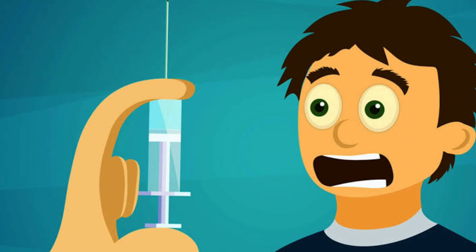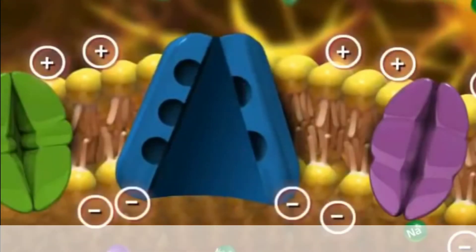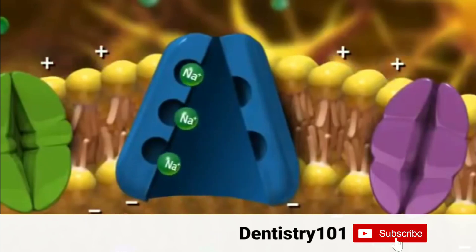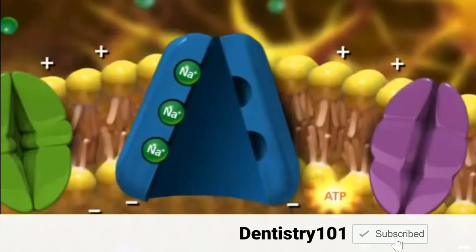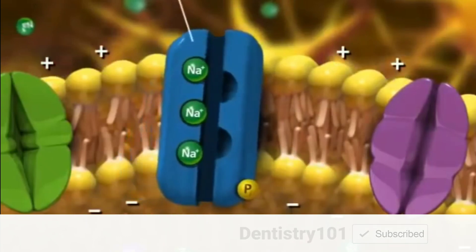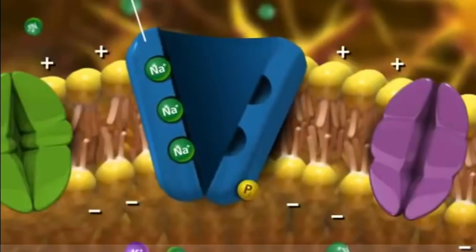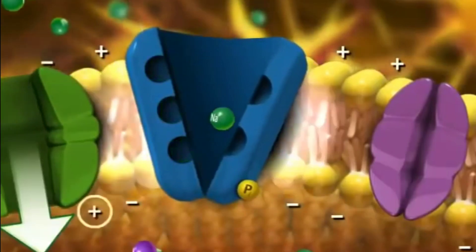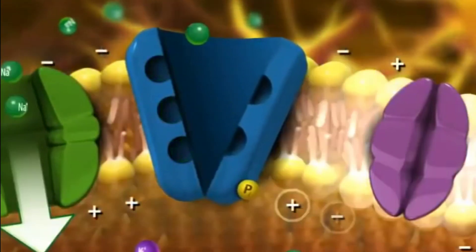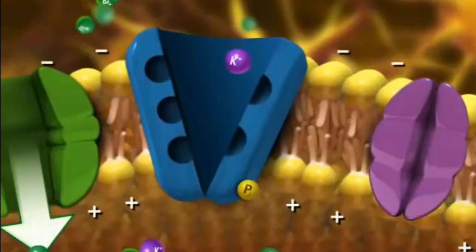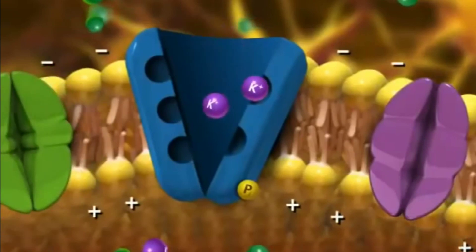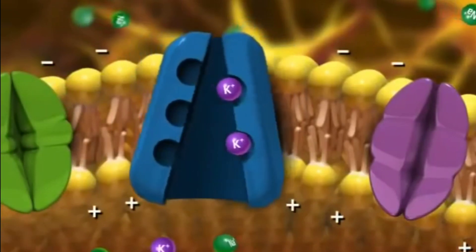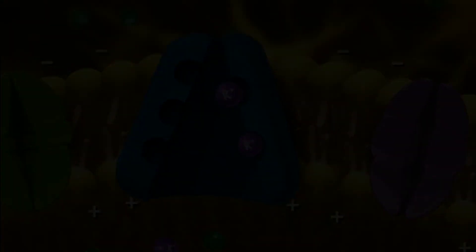Pain transmission to the brain happens through sodium ions along the nerves. The movement of sodium ions into the nerve cells transmits the pain impulse to the brain. Local anesthesia prevents sodium entrance to the nerve by blocking the sodium channels, which eliminates the transmission of pain to the brain. Hence, there will be no nerve depolarization and no feeling of pain.